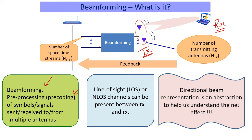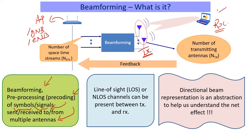On the transmitter side, beamforming can operate at symbol or signal level. On the receiver side, again, it's the same options. Whenever we talk about beamforming at the TX and/or the RX, multiple antennas are involved. Though I am using a Wi-Fi AP as an example, it's applicable to a gNodeB, eNodeB, etc., and it could apply to a variety of station-side equipment as well.